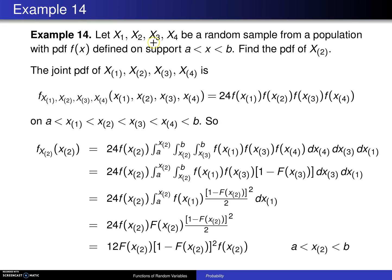Let x1, x2, x3, and x4 be a random sample from a population with probability density function f of x, defined on the support a is less than x is less than b. Find the probability density function of the second order statistic, x sub 2.